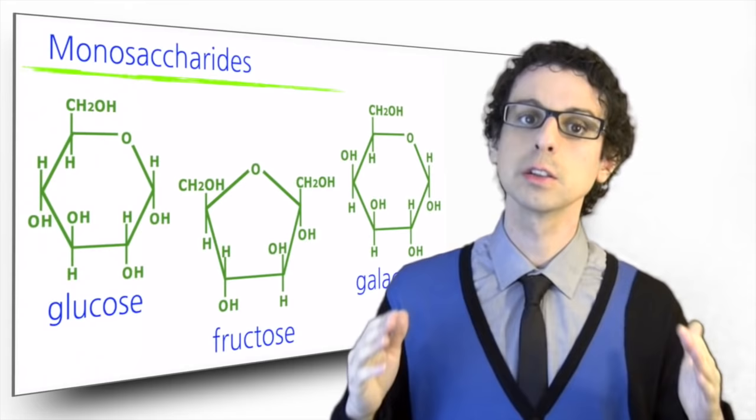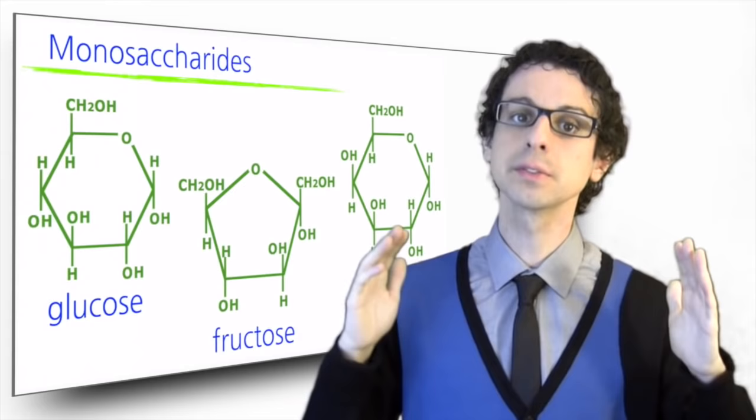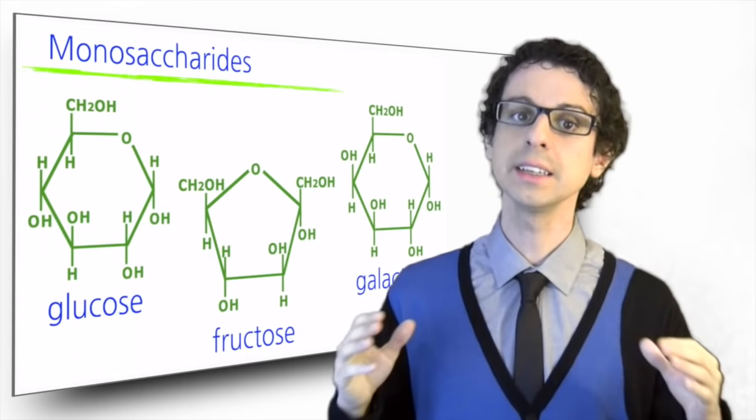Glucose, fructose, and galactose are the only carbohydrates that our intestine can absorb. Every other carbohydrate, before it can enter our body, must first be broken down into glucose, fructose, or galactose during digestion.